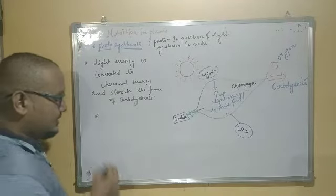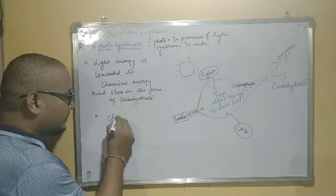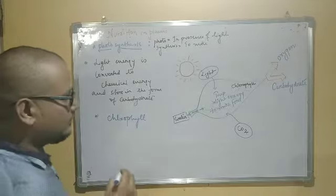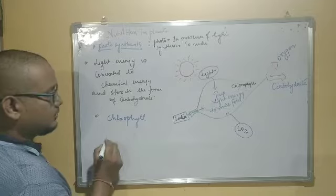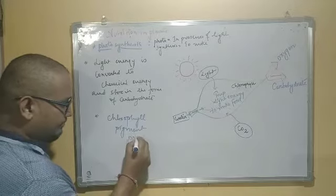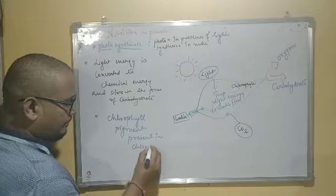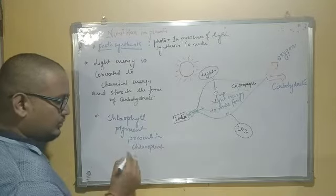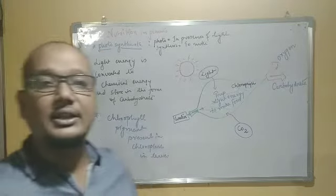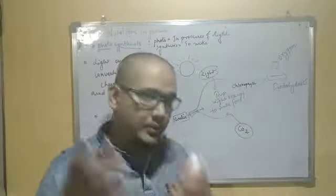The chlorophyll pigment is present in chloroplasts, and chloroplasts are present in leaves. Ultimately, the leaf is the platform where the photosynthesis process takes place and the final product or food is prepared.